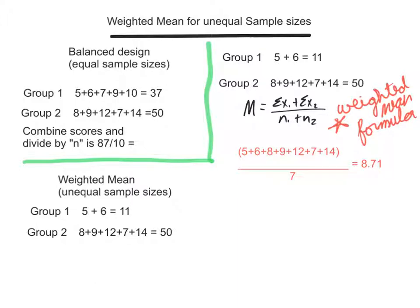In the second part, we're going to use weighted mean for unequal sample sizes. When you have a study with equal sample sizes (also called a balanced design), does it matter if you get the mean by adding up all the scores or just averaging their means respectively?